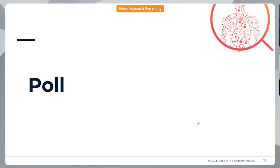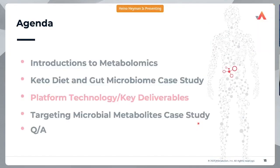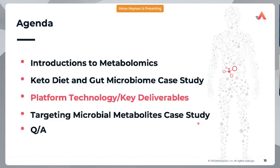Thank you, Alphonse. The next section talks specifically about our services and products and how they can be used, as well as what clients can expect as key deliverables. At Metabolon, we have two main categorizations of services. The first falls under Metabolon Discover — our discovery panels, of which our global discovery panel is our flagship product, providing relative quantification of a large number of metabolites with a broad, open-lens view.